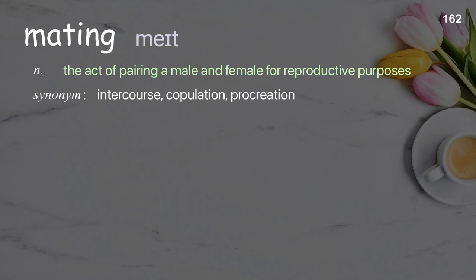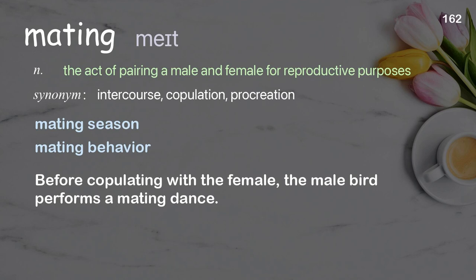Mating: the act of pairing a male and female for reproductive purposes. Examples: mating season; mating behavior; before copulating with the female, the male bird performs a mating dance.